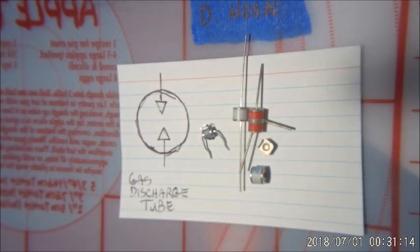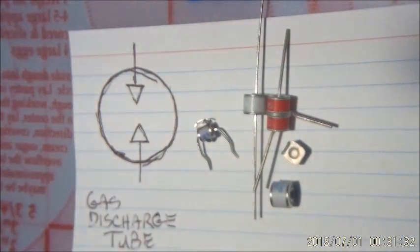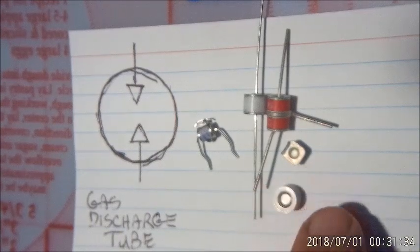Okay, a little lesson on some of the components that we're going to use for our surge protectors. First, gas discharge tubes. As you can see, there's a schematic symbol right there and a few examples. These are surface mount, and you can get them in all kinds of configurations and voltages.